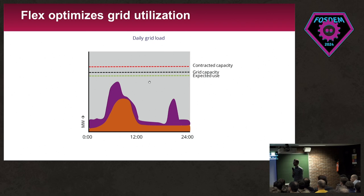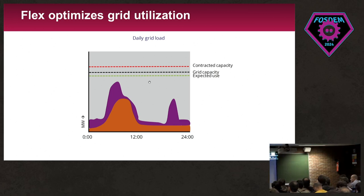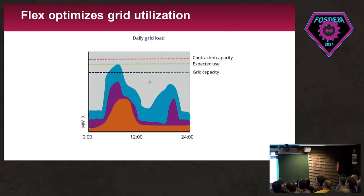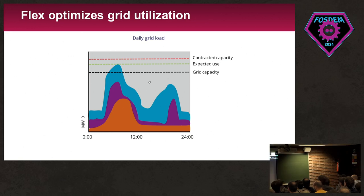At some point it got so bad that our grid capacity is reached. When this happens, two things might occur: either your transformer is somewhat overloaded but keeps working, or if you do it too often, it will blow up or really shorten its lifespan by a lot. So we try to prevent that from happening.